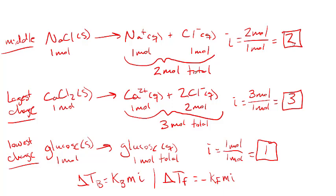It's important to note that the Van't Hoff factor for a strong electrolyte ideally equals the number of particles it breaks into in solution — NaCl gives i = 2 and CaCl₂ gives i = 3. However, in reality dissociation isn't always complete, so the Van't Hoff factor may not be a whole number. For example, instead of 2, it might actually be 1.9, or instead of 3, it might be 2.8. The same relationships to the equation still apply.